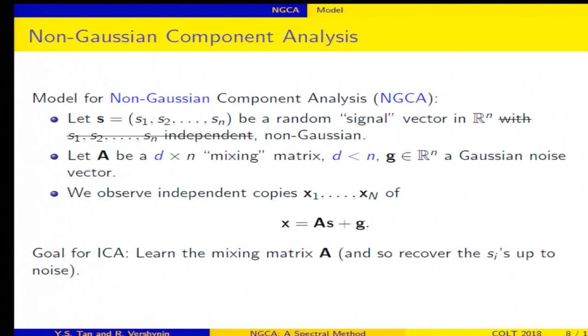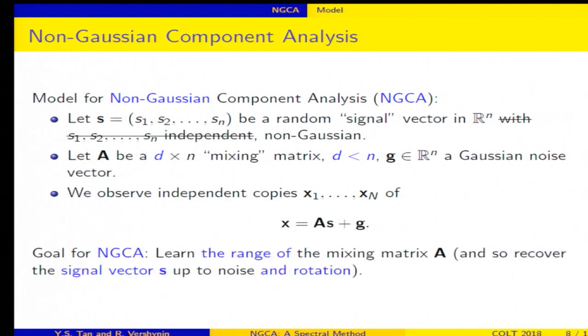And we continue to observe independent copies, but the goal is different. The goal is now simply to learn the range of the mixing matrix A. Okay, so the range of A can also be seen as the non-Gaussian subspace of the random vector X.